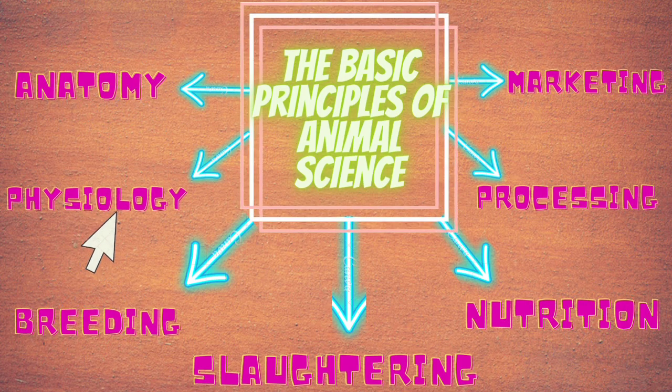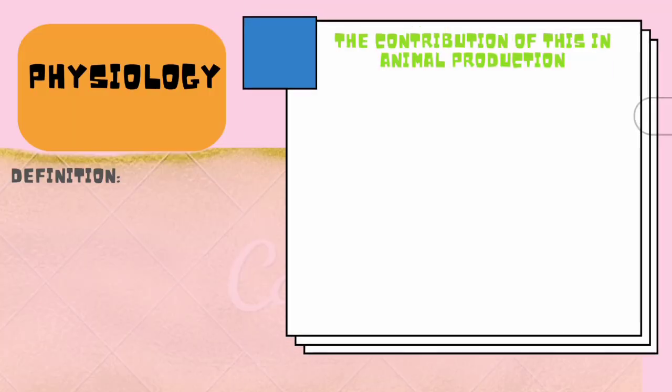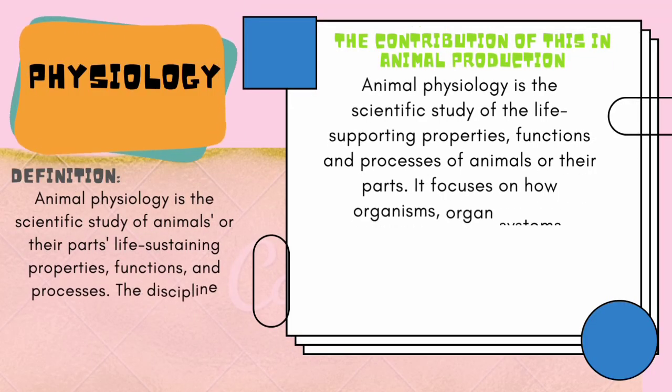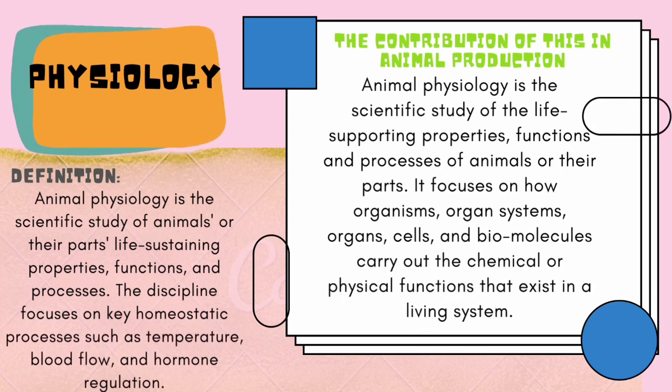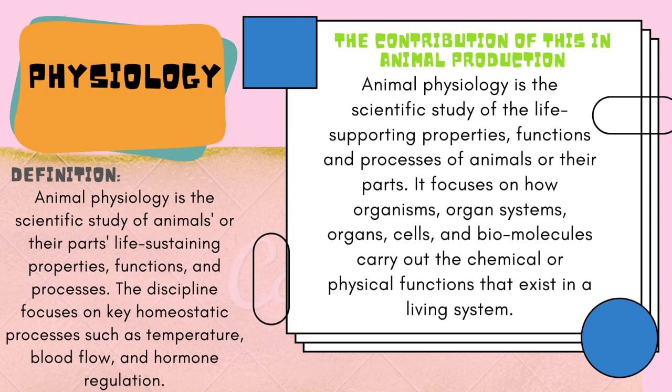The second basic principle is physiology. Animal physiology is a scientific study of animals or their parts, life-sustaining properties, functions, and processes. The discipline focuses on key homeostatic processes such as temperature, blood flow, and hormone regulation. Animal physiology focuses on how organisms, organ systems, organs, cells, and biomolecules carry out the chemical and physical functions that exist in a living system.